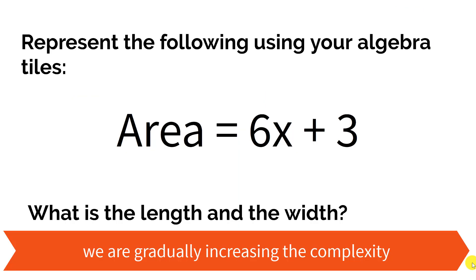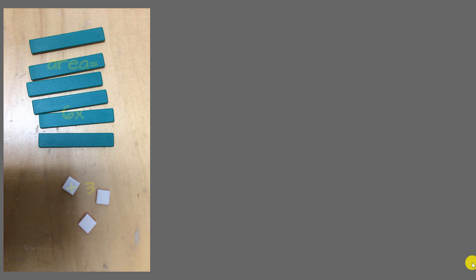Now we're ready to add in both a variable and a constant term, and we're going to ask students to now build a rectangle out of these. Students can easily grab their 6x plus 3, and they recognize that has to be the area of their rectangle. But there's going to be some productive struggle here making a rectangle.